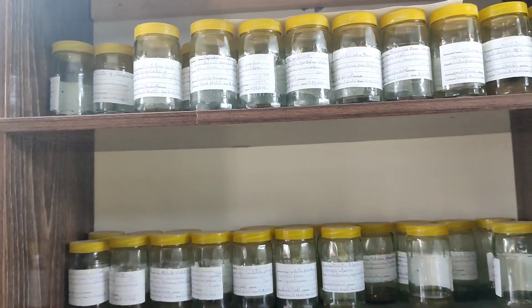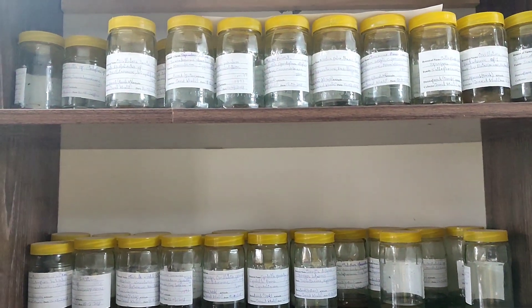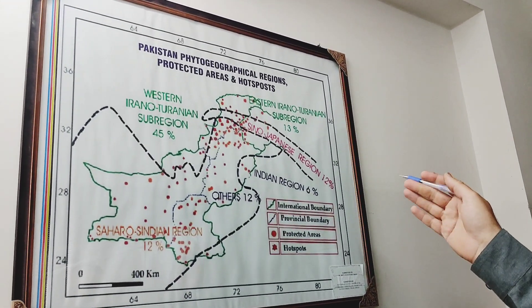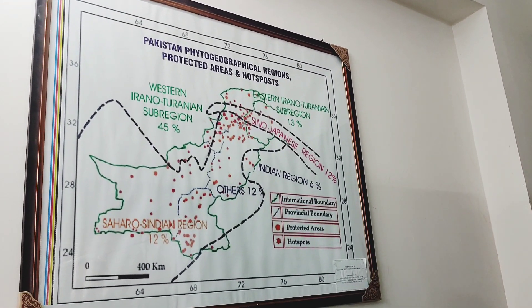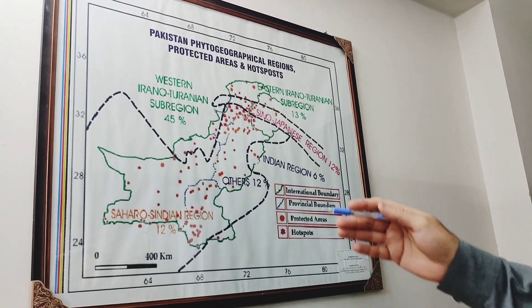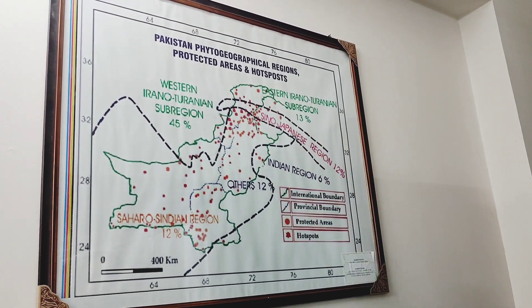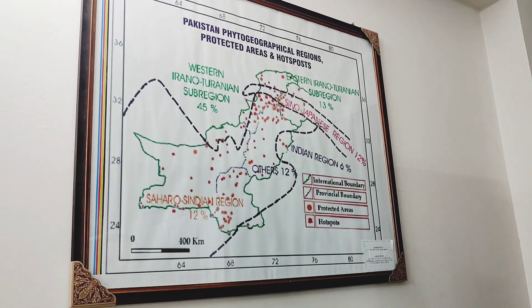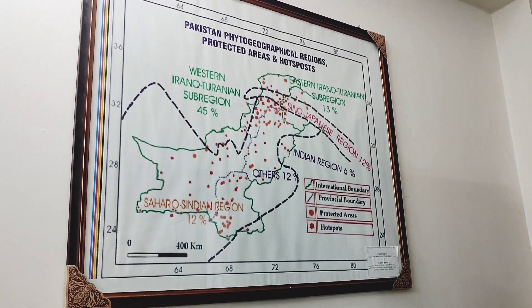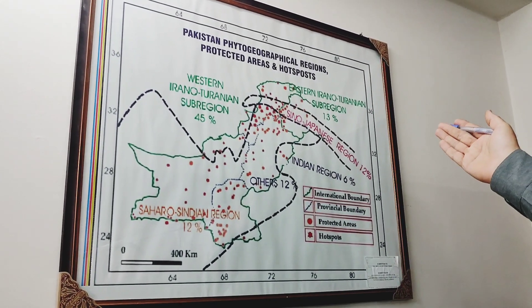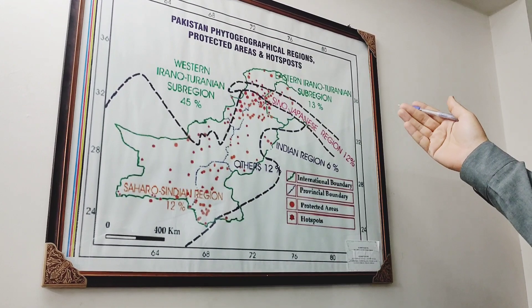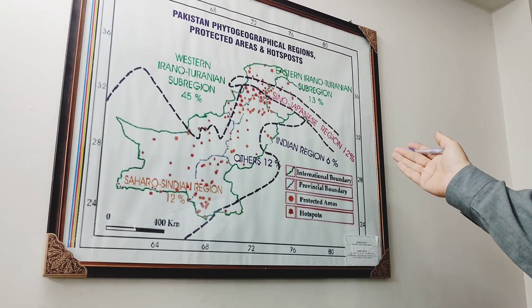This area is also enriched with indigenous algal species. Phytogeographically, Pakistan is divided into major phytogeographic regions. The major region is the western Irano-Turanian region, comprising 45% of the flora of Pakistan. Then we have the eastern Irano-Turanian region at 13%, the Indian region at 6%, and the Saharo-Sindian region at 12%.